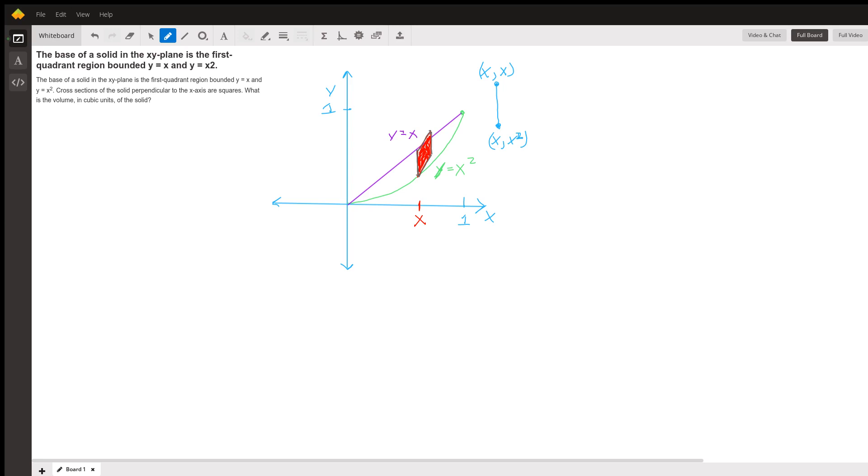Now we see the cross sections of the solid perpendicular to the x-axis are squared. That means for any value x, the line segment connecting the two curves is the base of a square rising above that figure. So the dimensions, let's look at that line connecting the two curves at the value x.